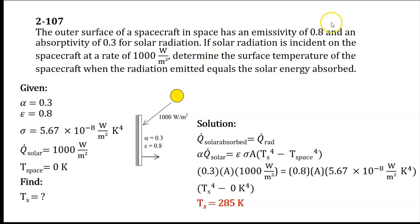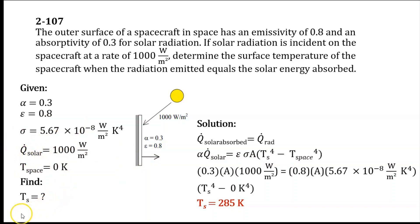We have an emissivity of 0.8, an absorptivity of 0.3, and a rate of solar radiation of 1000 watts per square meter. We are to find the surface temperature of the spacecraft when the heat loss from the outer surface by radiation equals the solar radiation absorbed.